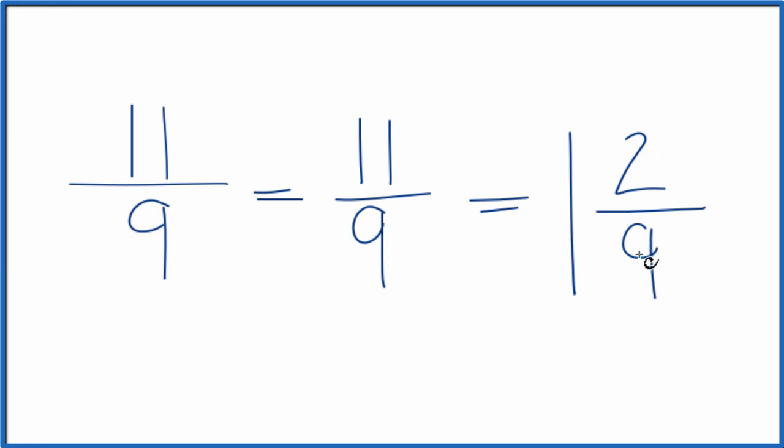You can check that. 1 times 9 is 9. 9 plus 2, that gives us the 11. And we just keep the 9 there across.